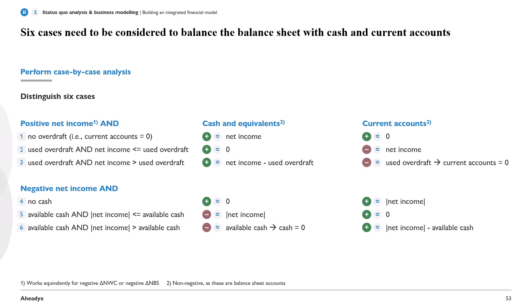Now let's look at the sixth case: the absolute value of net income is larger than the available cash. This means cash and equivalents go down to zero and we need to draw on current accounts. The amount drawn is the absolute value of net income minus the available cash — what we didn't already have enough cash to cover. These are the six cases for balancing the balance sheet.